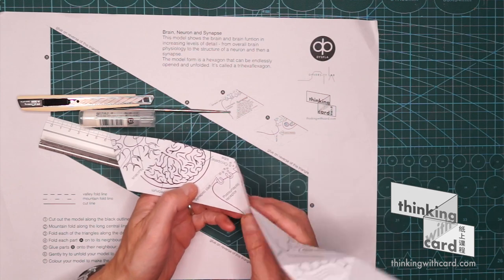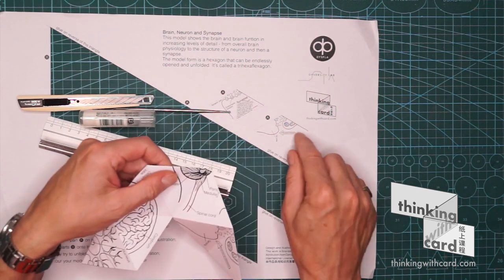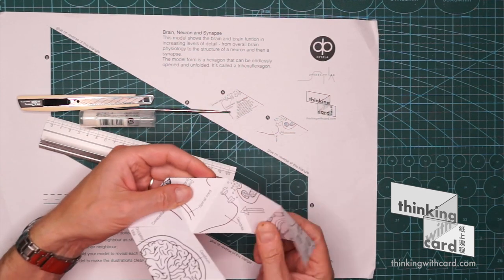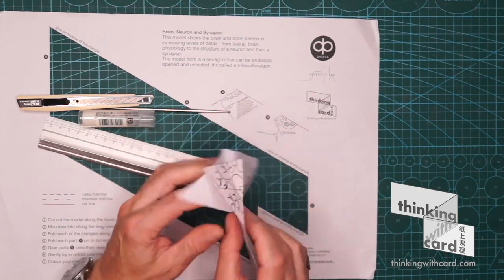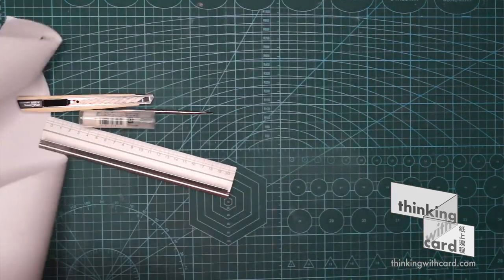So that one folds on top there. And then look for the other one. That one folds on top there. And that's nearly our hexagon.